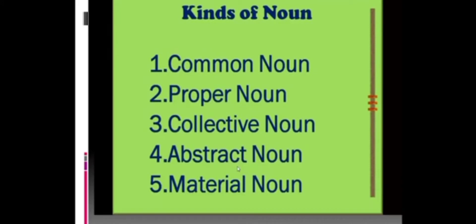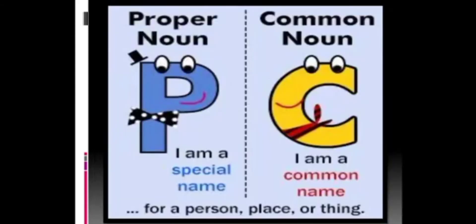In the previous class, we have learnt that there are 5 types of noun: common noun, proper noun, collective noun, abstract noun and material noun. We have learnt about proper noun which is a special name or the particular name of a particular person, place, animal or thing. Common noun is a name which can be used for any person, place, animal or thing of the same kind.